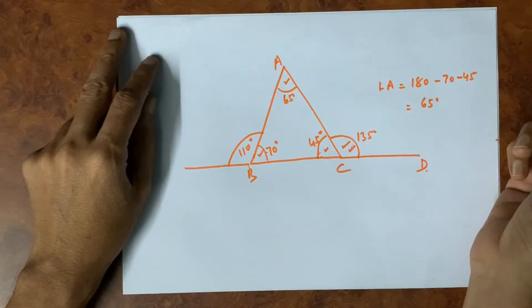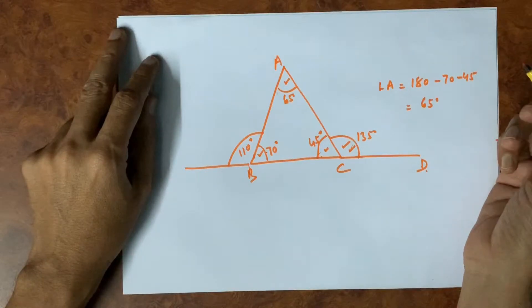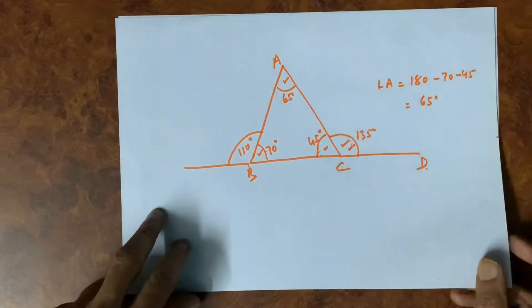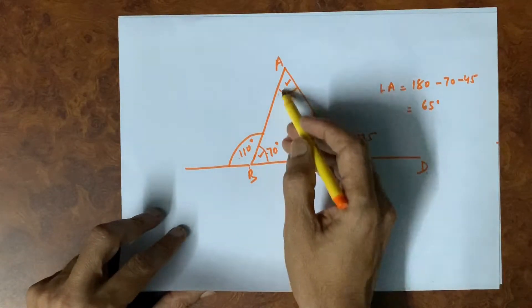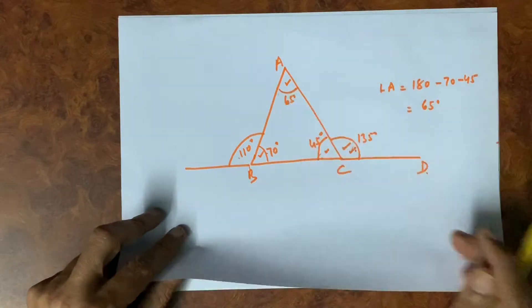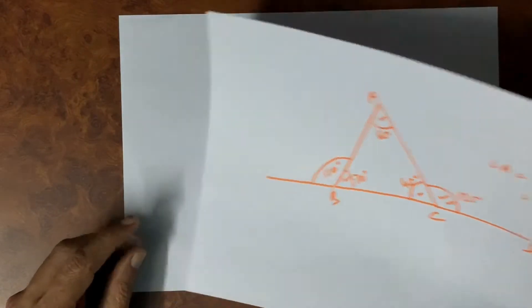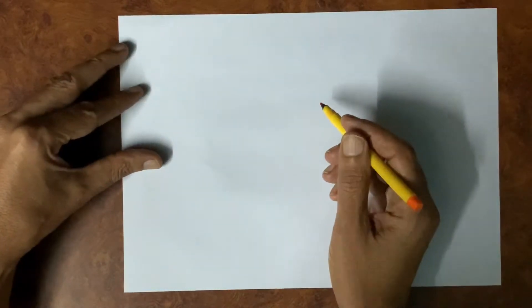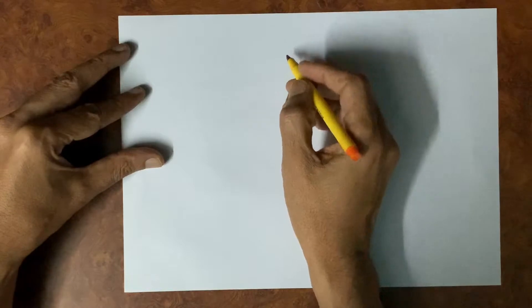So we have calculated that if two exterior angles of the triangle are given, we can calculate all three angles. Now we do one more problem based on these two theorems.